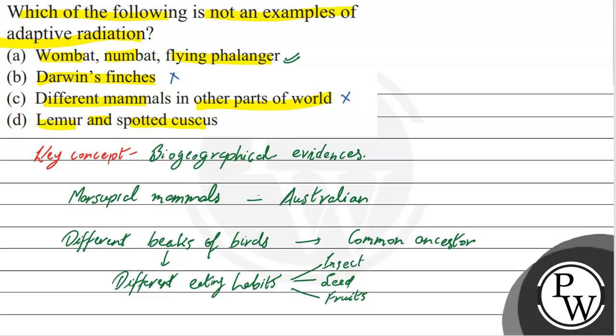Similarly, let's talk about lemur and spotted cuscus. Lemur is a placental mammal, while spotted cuscus is a marsupial mammal. Both are mammals with some common features, but they have different adaptations - one is placental and the other is marsupial. This is also adaptive radiation, so this option is incorrect.